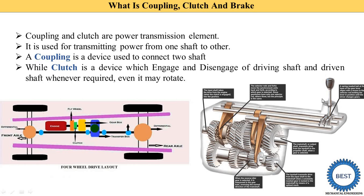When we press the clutch, the driving shaft and driven shaft are disengaged, and we change the gear. When we change the gear, the speed of the vehicle is increased. So, clutch is used to engage and disengage the driving shaft and driven shaft, and which gear is connected depends on the gear selection.